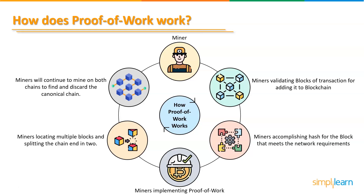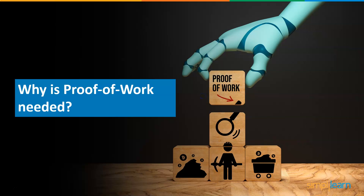Miners will initially continue to mine on both chains, but once another block is discovered on top of one of the two prior blocks, that chain becomes the canonical chain and miners are economically incentivized to discard the other block. One advantage of proof of work in terms of security is resilience to sybil attacks, which occur when one player generates many false identities to gain an unfair edge. 51% attacks occur when a single user controls more than 51% of the network's resources, gaining control over the adding of new blocks.